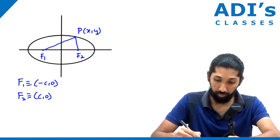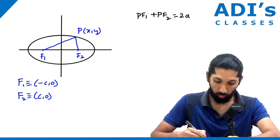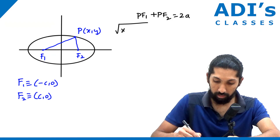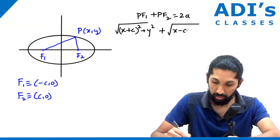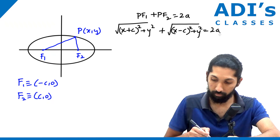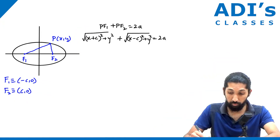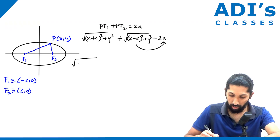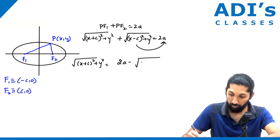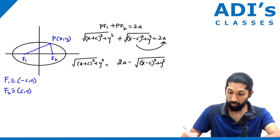We use the normal distance formula. PF1 + PF2 = 2a, so: √((x+c)² + y²) + √((x−c)² + y²) = 2a. You can't directly square it, so transpose one radical to the right-hand side: √((x+c)² + y²) = 2a − √((x−c)² + y²). Now square both sides.